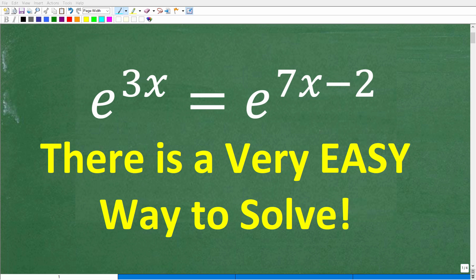This equation may look a little complicated or intimidating or advanced for some of you, but actually this is very easy to solve with just basic algebra. Let's go ahead and take a look at the equation. We have e to the 3x is equal to e to the 7x minus 2, and what we want to do here is solve for x.